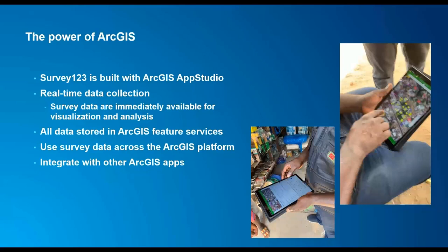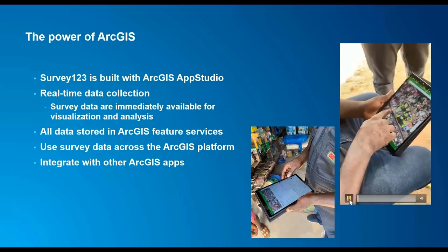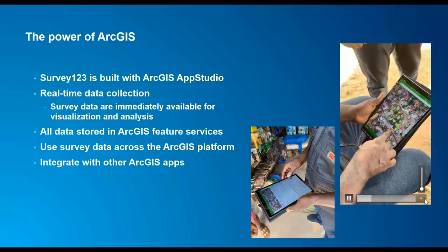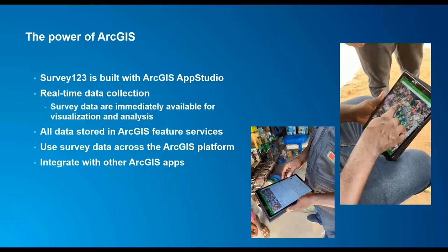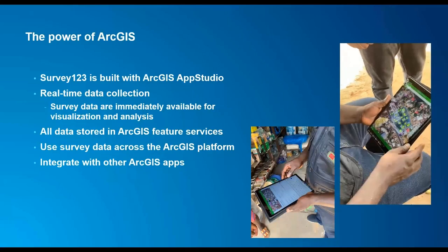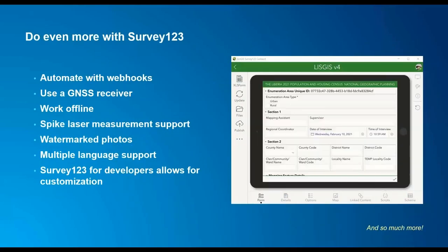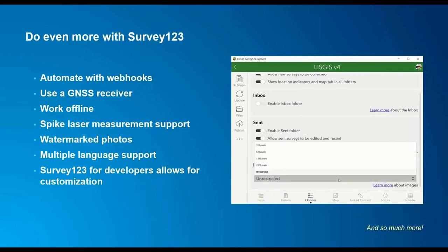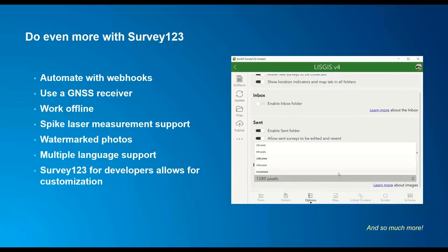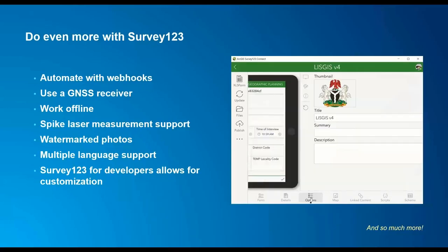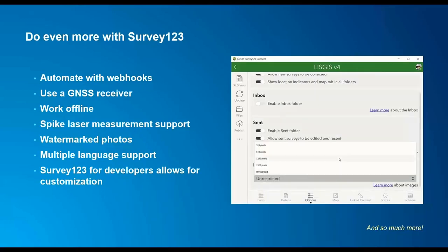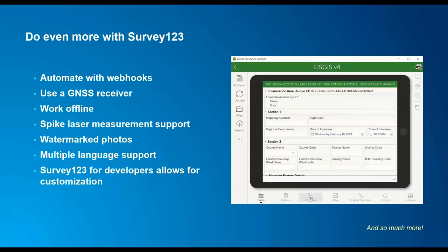On screen you can see an example of this application being used in the demarcation process, showing how enumerators can simply use their finger to draw on the device to delineate the enumeration area and indicate the households to be included. There's also a lot of automation available: you can automate with webhooks, use Survey123 for developers to customize your own version, leverage the JavaScript API, a feature report API, and many other tools — plus multi-language support. Another function allows us to limit the size of photos being uploaded.